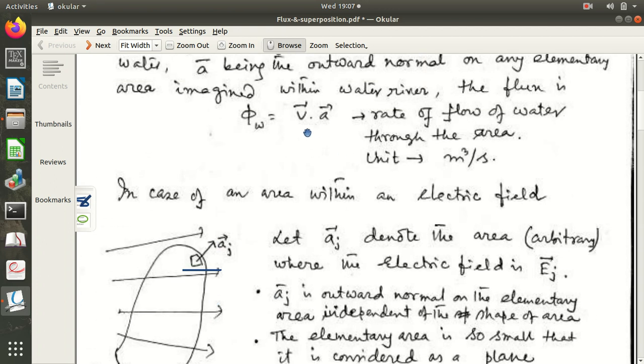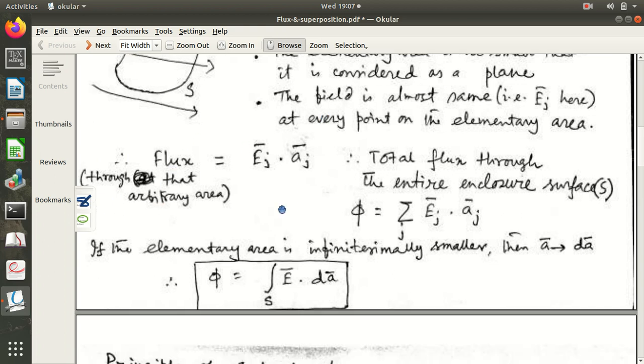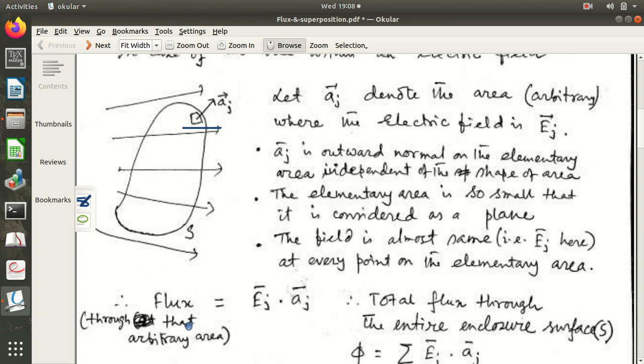So, the flux, according to our definition here, as we understood here, the flux through that arbitrary area, A arbitrary area there, the flux through that arbitrary area is EJ dot AJ, that means area.